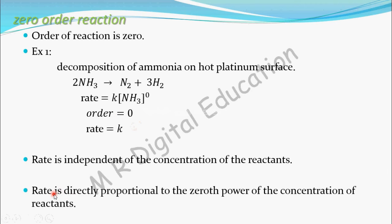For a zero-order reaction, the rate is directly proportional to the zeroth power of the concentration of the reactants — that is, NH3 here. So for a zero-order reaction, the order is zero. Rate is independent of the concentration of the reactants, and rate is directly proportional to the zeroth power of the concentration of the reactant.